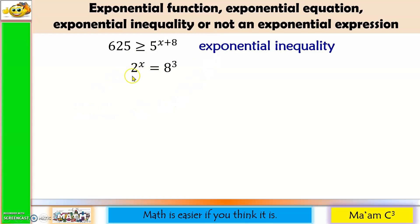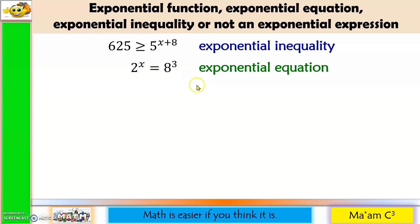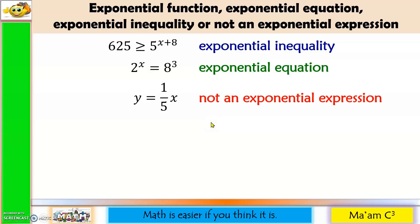Next one: I have here a constant raised to a variable, so this is an exponential expression. Then, 8 cubed is simply a constant. I also have an equal sign. Therefore, this is an exponential equation. Another one: I have here y, an equal sign, and a constant, but I do not have an exponent. Therefore, this is not an exponential expression.